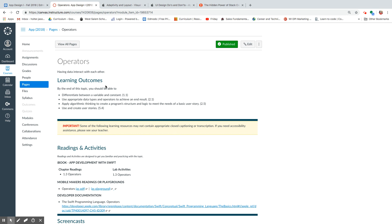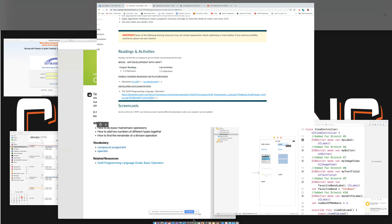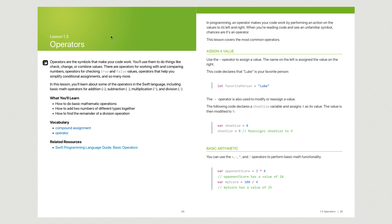This moves us into operators, and you can see we're jumping around again with the textbook. Operators is actually on 1.3 — operators are symbols that make your code work. You'll use them for doing things like check, change, or combine values. There are operators for working with and comparing numbers, operators for checking true and false values, and operators that help simplify conditional assignments. In this lesson, you're going to learn about operators in Swift using basic math operators for addition, subtraction, multiplication, and division. This is stuff that if I had broken it out three weeks ago might have been difficult, but at the point you're at now, it totally makes sense because you've done a lot of this already.